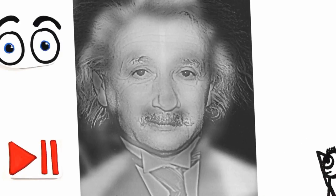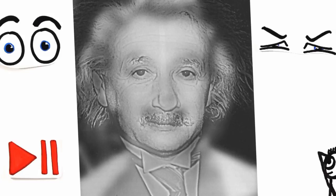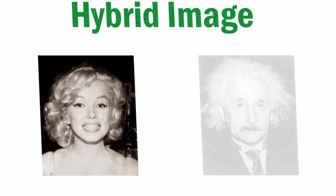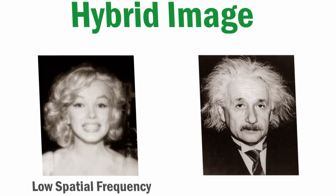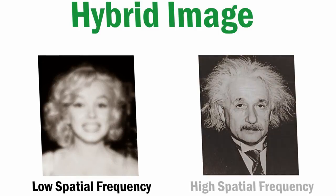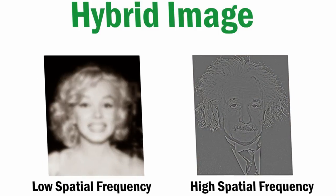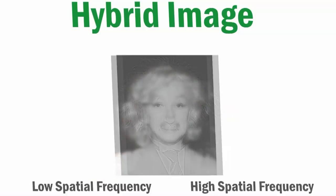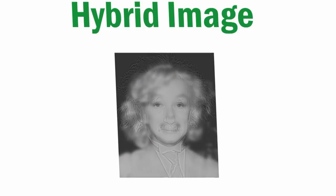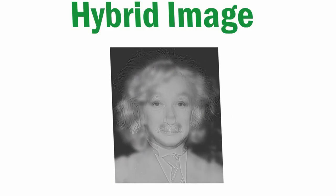You can achieve the same effect by squinting your eyes to blur the photo. So, what's going on? Well, this image is an example of a hybrid image, whereby a low spatial frequency of one picture is combined with a high spatial frequency of another. But depending on how well you're able to focus or pick up contrast, your eye will only pick out certain details.